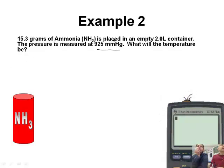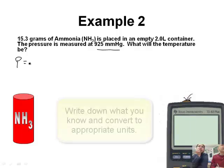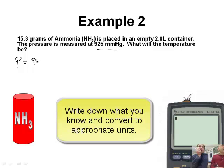So what do we know here? We've got 15.3 grams. Let's do P first. P is 925 millimeters of mercury. But that's not the right unit — we've got to convert that to atmospheres. There are 760 millimeters of mercury in one atmosphere.